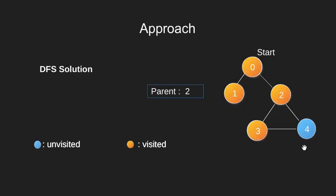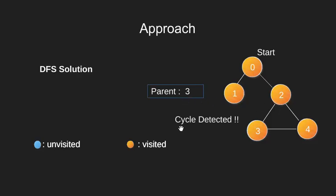We mark 4 as visited. Since we are coming from node 3, we change our parent variable to 3. Now from 4, we have 2 neighbors: node 3, which is visited but is the parent of node 4, and node 2, which is visited but is not the parent of 4. Since this satisfies the condition we discussed previously, we can say that we have found a cycle.